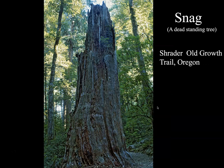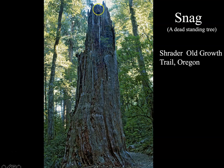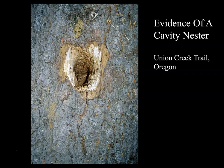Trees that die and are left standing are called snags. The dead tree will have fungus and insects attack it, and the wood becomes much softer than a living tree. These are what cavity nesters prefer — animals that drill holes or cavities in the tree to nest in. A woodpecker is an example of a cavity nester. A healthy living tree would be very difficult for a woodpecker to create a cavity in. Here you can see evidence of a hole created by a woodpecker for its eggs — so again, it is a cavity nester.